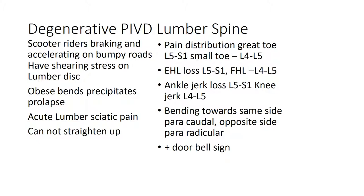Degenerative lumbar spine, also called prolapsed intervertebral disc, similarly affects scooter riders. One day they bend and this precipitates the prolapse — acute lumbar pain or sciatic pain and inability to straighten up. If pain is in the great toe it is L5-S1; small toe, L4-L5. If extensor hallucis longus is lost, L5-S1; if hamstring is lost, L4-L5. Bending towards the same side relieving pain indicates a paracordal prolapse; opposite side indicates a pararadicular prolapse. Another sign is the doorbell sign.